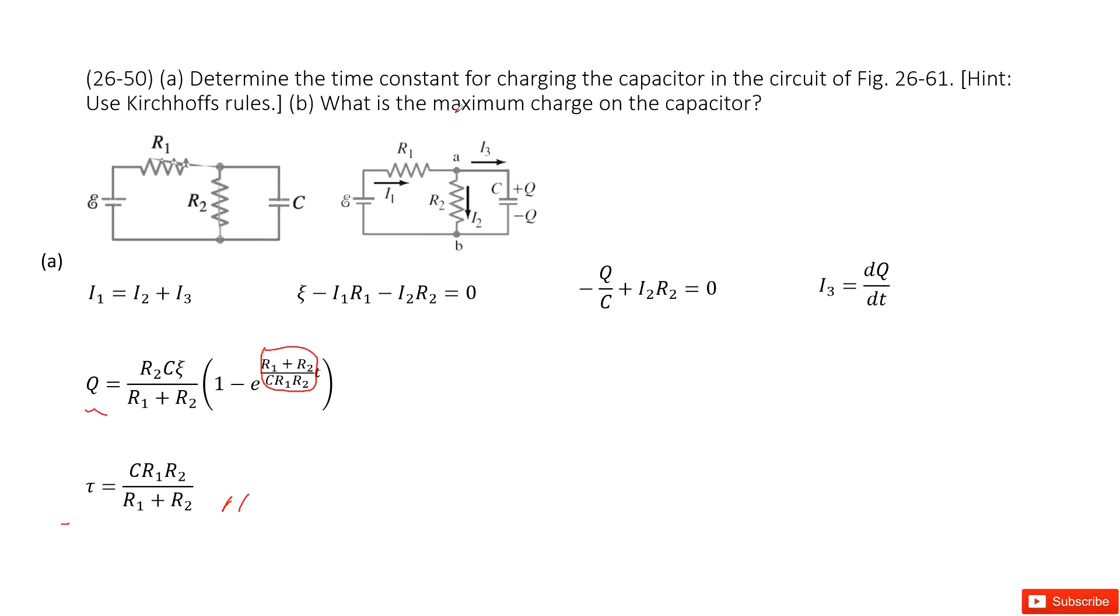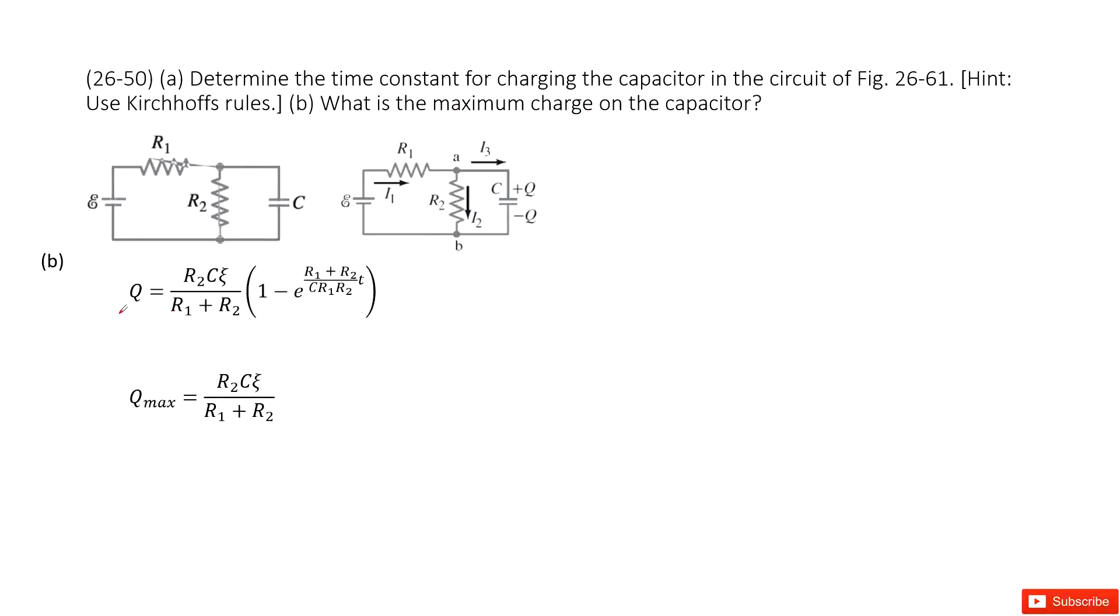Part b, what is the maximum charge on the capacitor? So we look at this function. This is the charge changes with time. So maximum is just this term. When the t equal to 0, so this term becomes 1, so the maximum is just this term. Thank you.